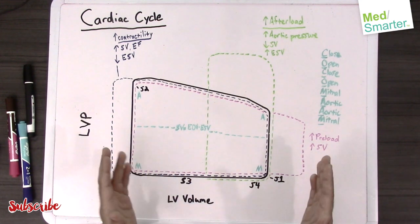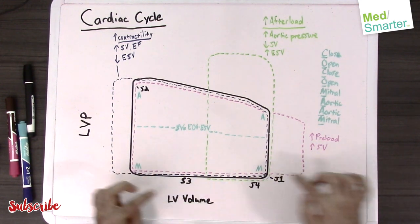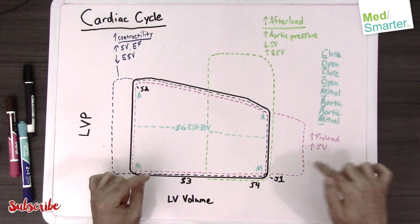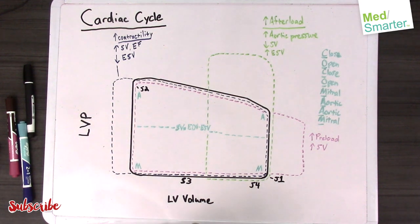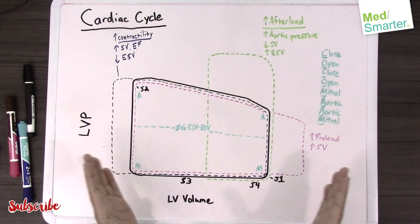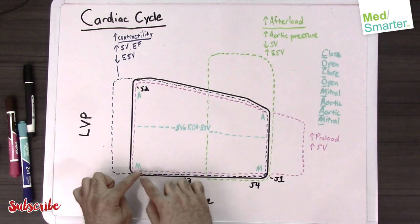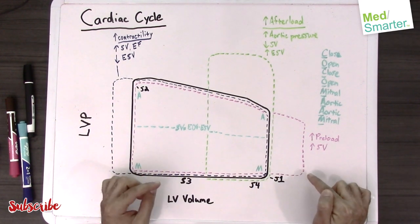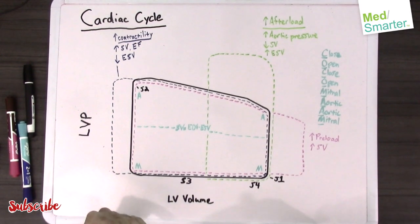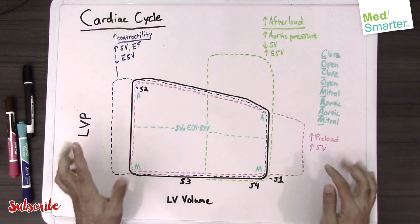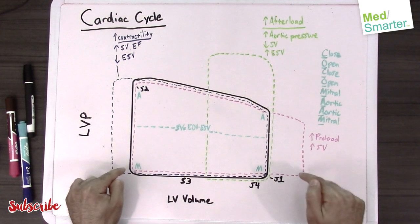In preload we have more filling. Preload, you always want to think of the load of the heart basically coming in from the SVC and IVC into the right atrium. So the more fluid we have coming into the heart, the more preload we have. That's designated in this graph by the elongation of the filling phase. If we have more blood coming into the right ventricle and left ventricle, now we're going to increase our stroke volume.